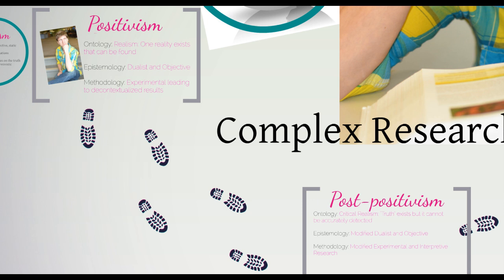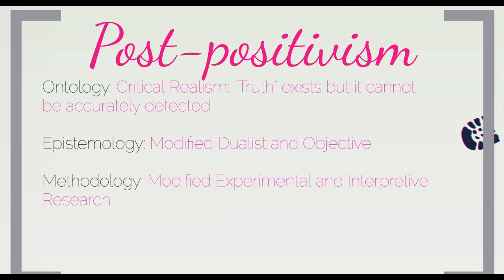Post-positivism is a paradigm that represents one of the earliest shifts away from positivism and shares a number of similarities with it. Post-positivism is founded on a critical realist ontology. Like realists, critical realists believe that a reality exists. However, they do not think that it can be perfectly detected due to our flawed ways of finding it as well as the nature of phenomena. Critical realists believe that claims of reality need to be critically examined in a variety of ways in order to get the closest possible estimation of reality, but it will never be perfect. In post-positivism, a theory cannot be proven, but a strong case can be made for it by disproving alternative explanations.